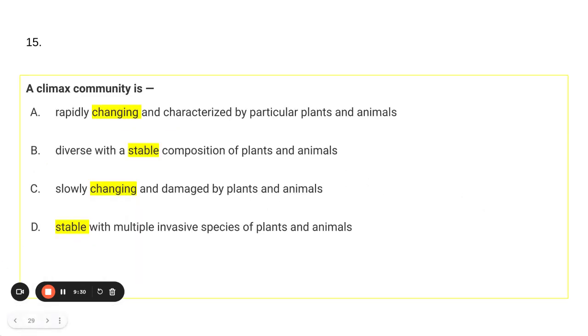Number 15. A climax community is, and you can see I've already highlighted some things, the keywords of either changing or stable. So a climax community is either changing or stable. Well, it's stable. So I'm taking away A and C, and I'm not even going to read through the rest of them. So now I'm looking at my two stable options.